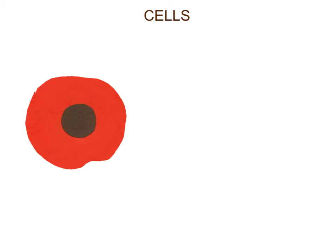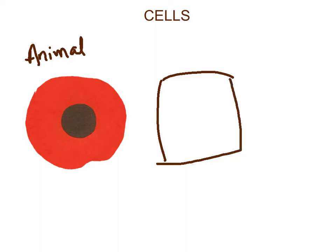We're going to start talking about the one we have on our screen. That is an animal cell, easy to determine because it has a round shape. Let's make a little diagram to represent a plant cell here. Those plant cells are very, very squared. And our last type of cell: bacteria.